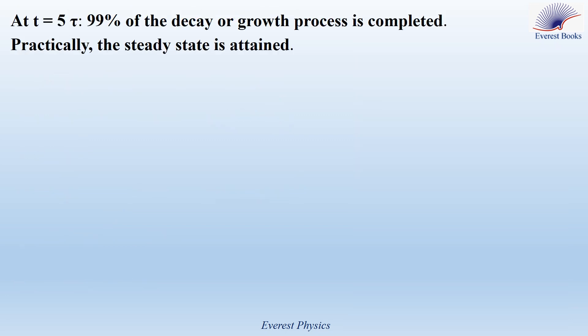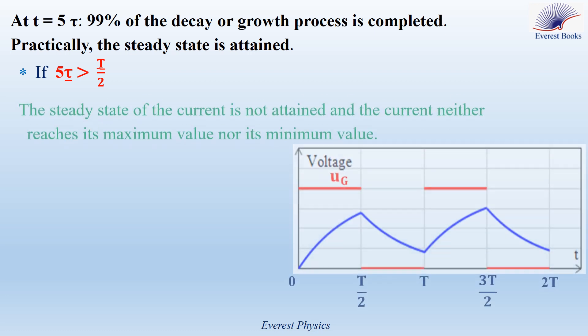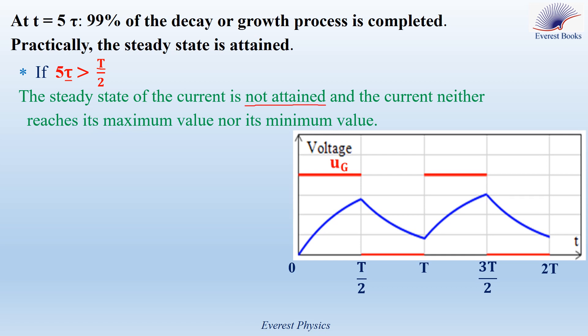The growth and decay processes of the current are attained practically at t = 5τ. Consider an RL series circuit connected across a generator delivering a square wave voltage of period T. First case: if 5τ > T/2 — since τ depends only on the inductance and resistance of the circuit while T/2 represents the time interval for each growth and decay process — when 5τ > T/2, the steady state is not attained, and the current reaches neither its maximum nor its minimum value, as shown in the figure.